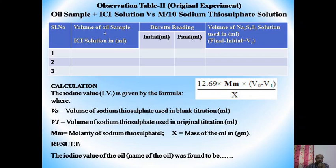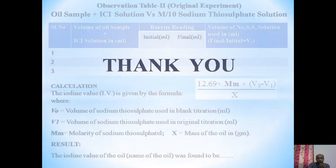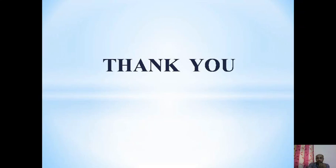The result — the iodine value of the oil — should be written as: 'The iodine value of [name of oil] was found to be [value].' Write the particular name of the oil given to you, and report the result accordingly. Thank you.